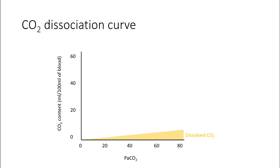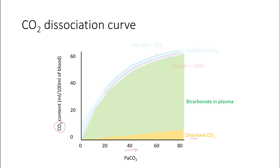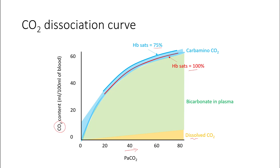Let's look at the carbon dioxide dissociation curve. The CO2 dissociation curve tells you how much carbon dioxide content there is as your PaCO2 changes. Part of the carbon dioxide is in dissolved form, and solubility increases with increased partial pressures. Most of the carbon dioxide in the plasma is in the bicarbonate form, which acts as a buffer. Part of the carbon dioxide is also present as carbamino form, and because carbamino has different attachment properties with hemoglobin at 100% versus 75%, you get two different lines.